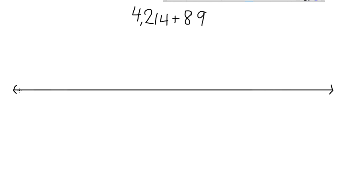Let's place 4214 on the left side of our number line. Now jump 40 to the right because when you add you move to the right on the number line. You would land on 4254.